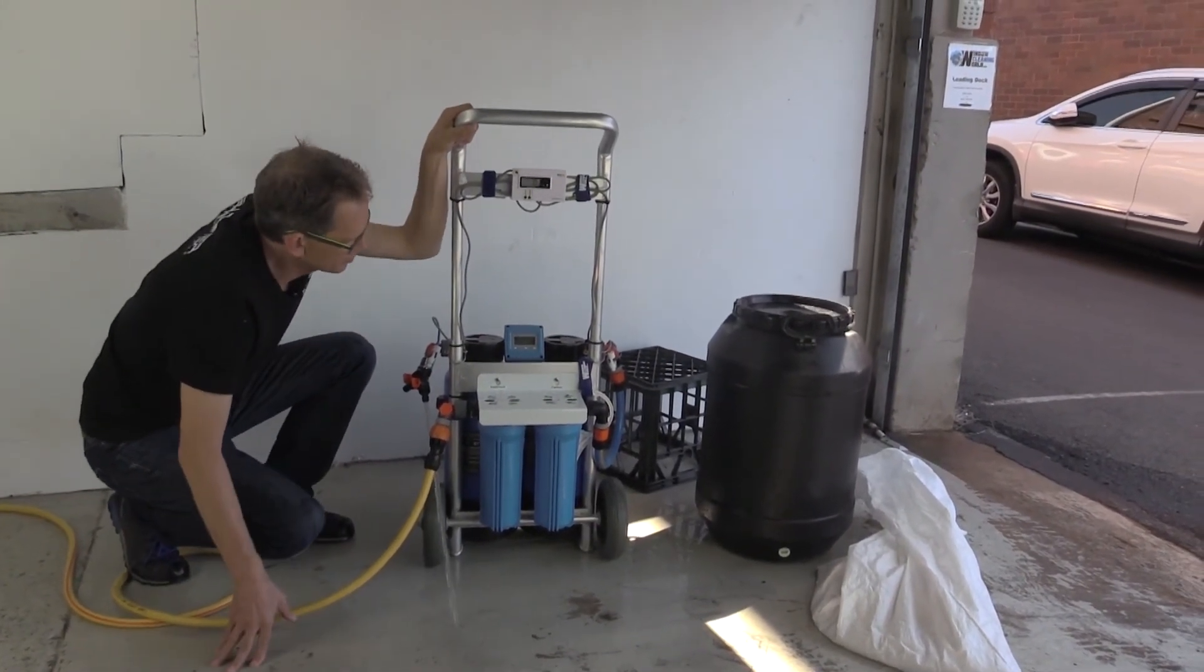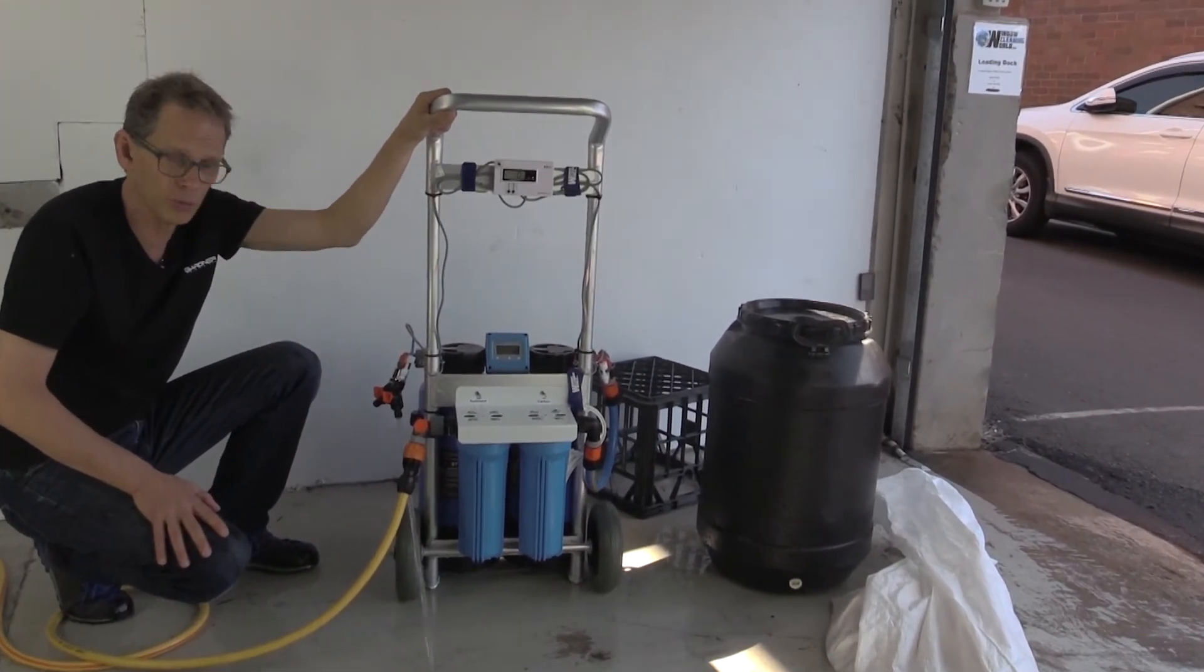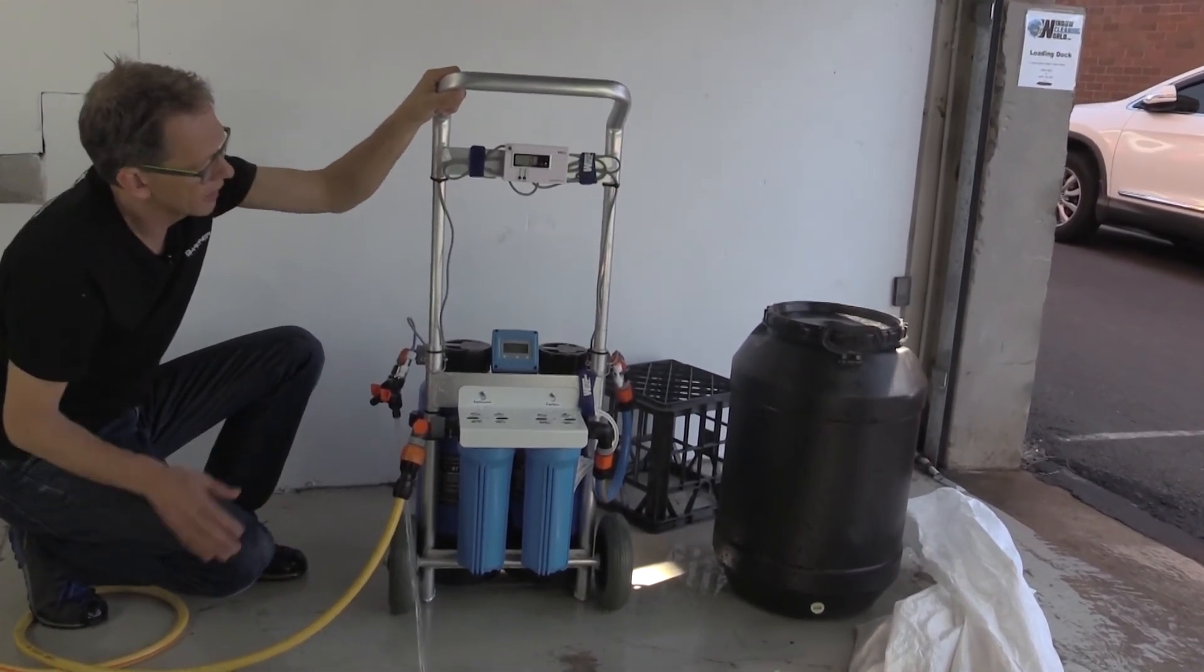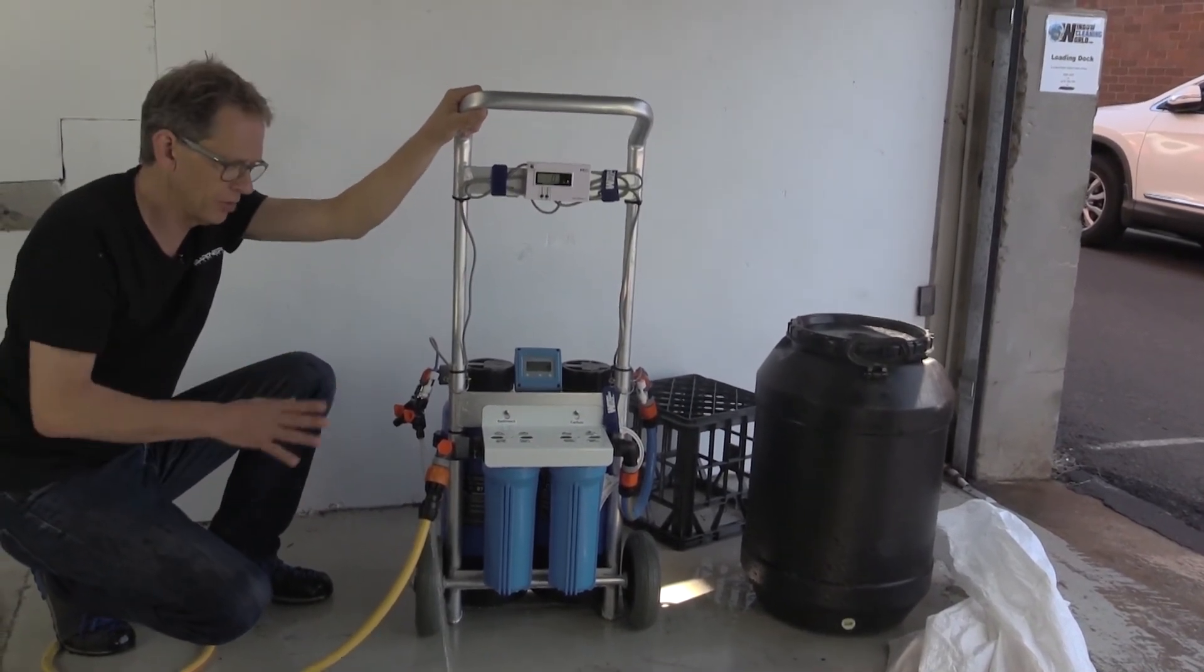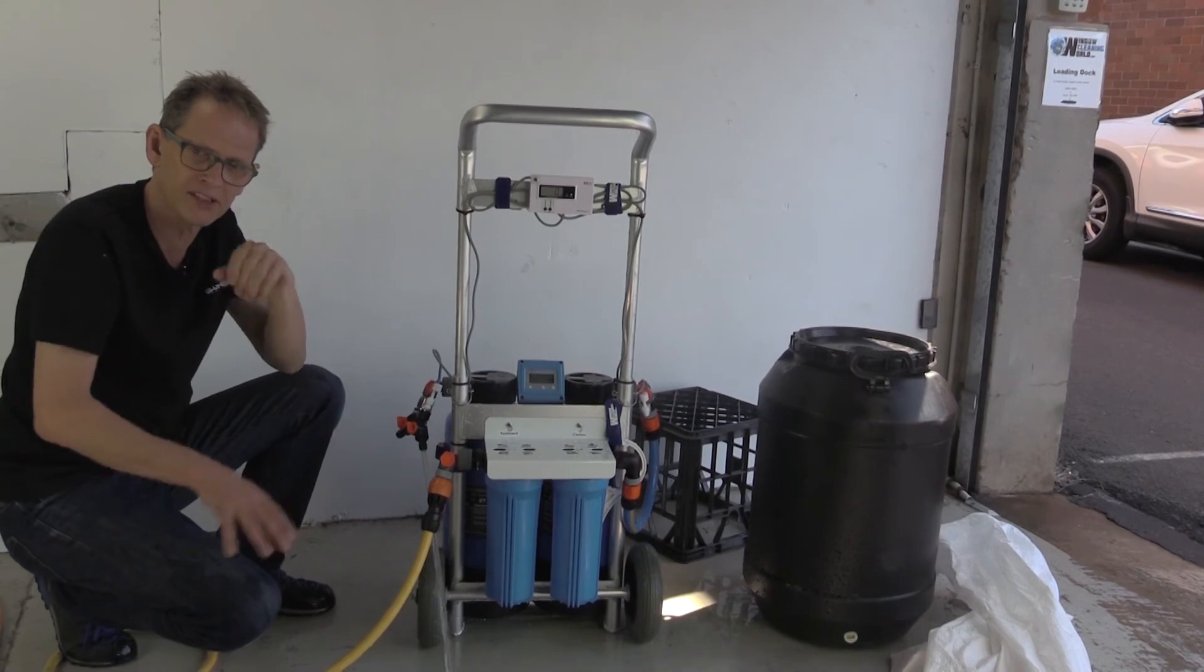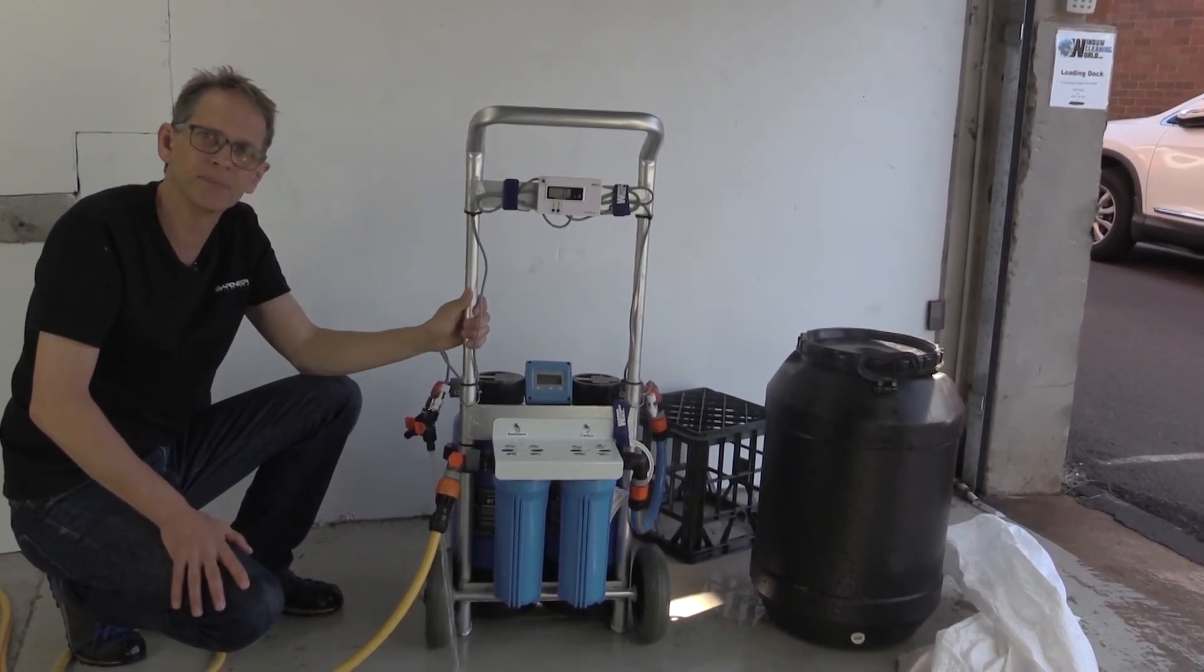So we have really strong water flow here. You could easily run two poles, if not three or four poles, with that much water coming out at zero TDS. So there you have it. How to do a resin change and how to swap the tanks over after a resin change on the Window Cleaning World Twin Tank 8-Litre system.